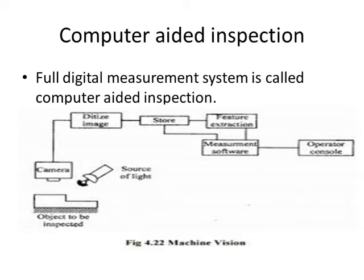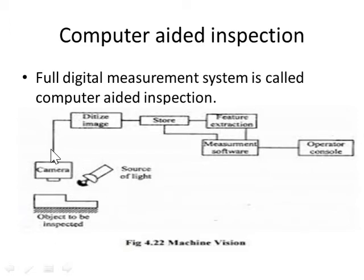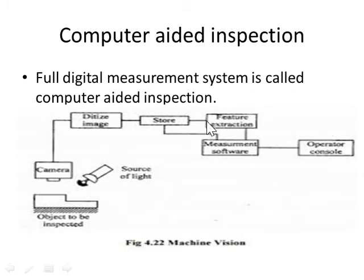Here we have a geometrical and image representation to easily understand computer-oriented inspection. There is a working object and an IR camera that senses the surface — for example, to find the surface roughness of the working object. The camera captures the image, which is then converted into digital data and stored in a storage device. From there, feature extraction is performed.